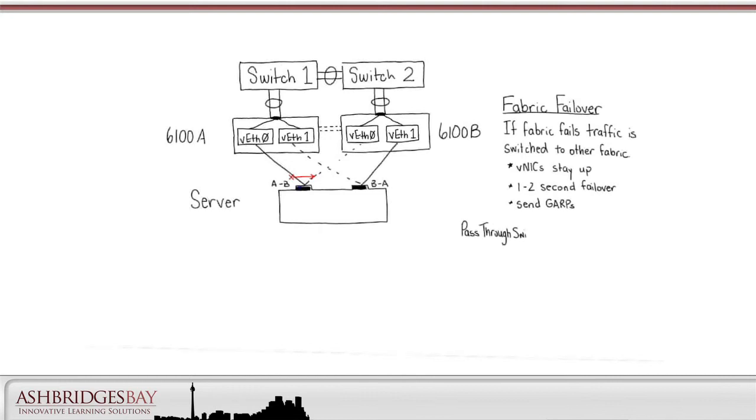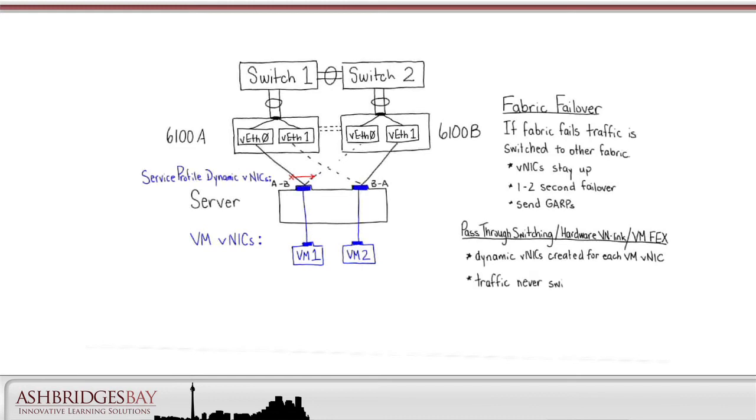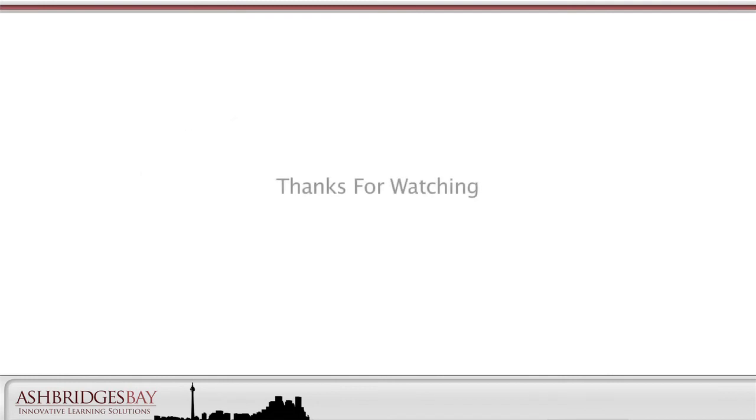Pass-through switching, otherwise known as hardware VNLINK or VMFAX, allows service profile VNICs to be created dynamically for each VM VNIC. Each VM VNIC has its own service profile VNIC. Fabric failover is automatically enabled for these VNICs. With VMFAX, the server does no switching. All switching is done on the Fabric interconnects. VMFAX also has many other useful features, but they are not typically used for UC on UCS. Thanks for watching.